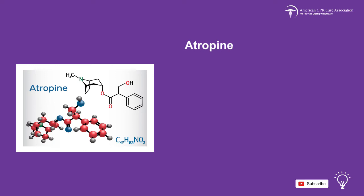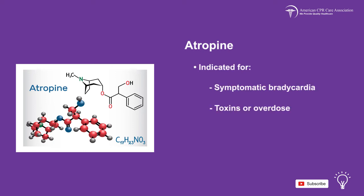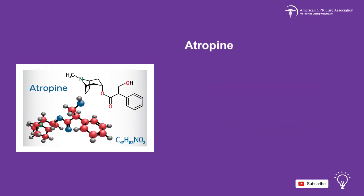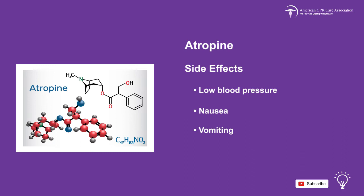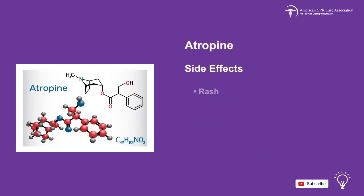Atropine is a drug indicated for symptomatic bradycardia, toxins or overdose, and rapid-sequence intubation. Some side effects may be headache, dizziness, blurred vision, tachycardia, low blood pressure, nausea, vomiting, urinary retention, rash, and dry skin.